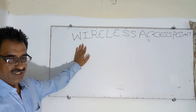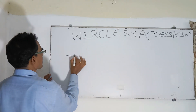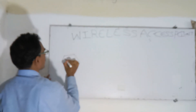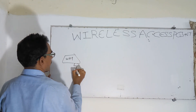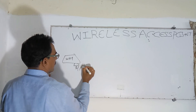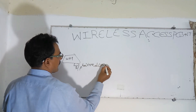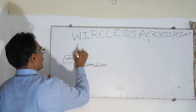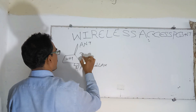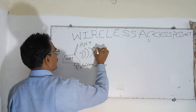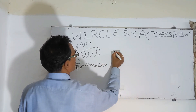Today's topic is the wireless access point. We give this input, and the antenna provides wireless output. This is over here, and it is going to connect mobiles and laptops.